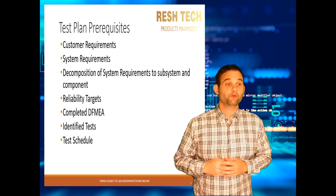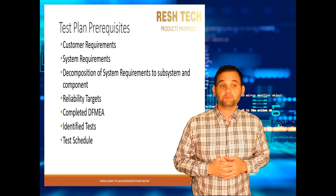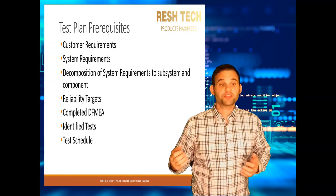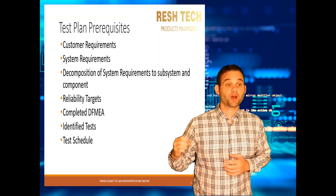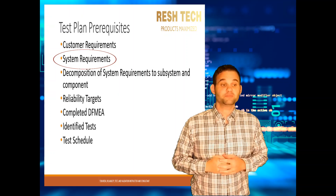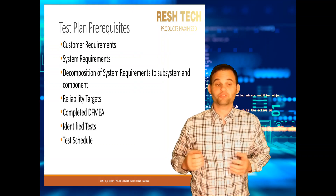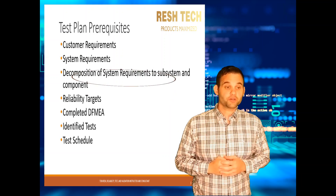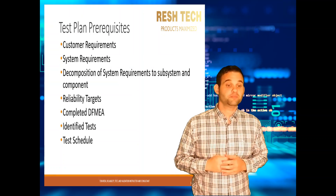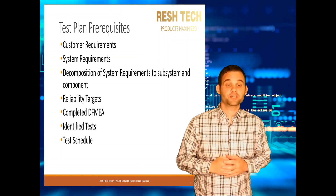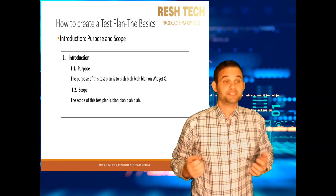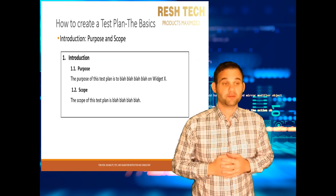There are a few things that need to be done before you jump into test plan development. You need the customer requirements, which is what the customer expects from the system or product. You need the system requirements, which are derived by systems and design engineering from the customer requirements. And you also need to decompose the system requirements for how the subsystem and components should perform to meet system level requirements.